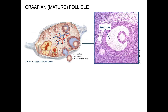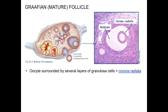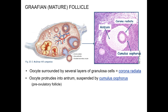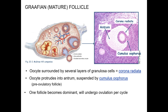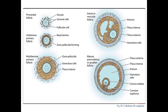As the antrum forms, the oocyte becomes surrounded by a layer of cells called the corona radiata, which will leave the ovary with the oocyte at ovulation. The oocyte becomes suspended in the antral cavity, supported by a small mass of granulosa cells called the cumulus oophorus. One follicle will become dominant and mature into a Graafian or mature follicle, while the remaining follicles undergo atresia. The oocyte of the dominant follicle resumes meiosis, producing the secondary oocyte with half the chromosomes and almost all the cytoplasm, but arrests in the second meiotic division until fertilization.